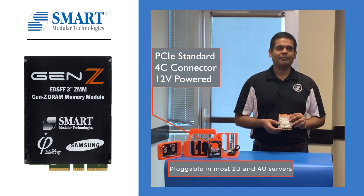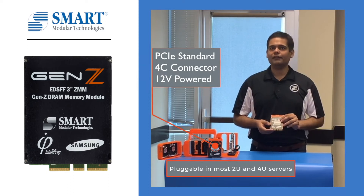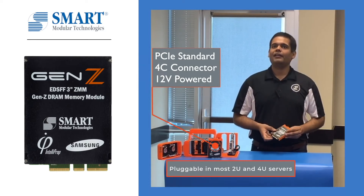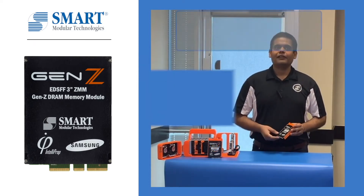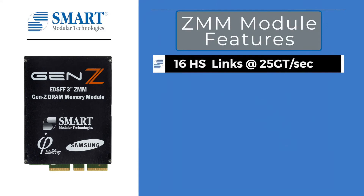These ZMMs have standard PCIe compatible 4C connector and are powered by 12V supply. The ZMMs can be plugged into most 2U or 4U servers and reuse existing backplanes. The HostSight 4C connector provides 16 high-speed GenZ links, each running at 25 Giga transfers per second, providing much higher data rate than PCIe Gen4 and just short of next-generation PCIe Gen5.